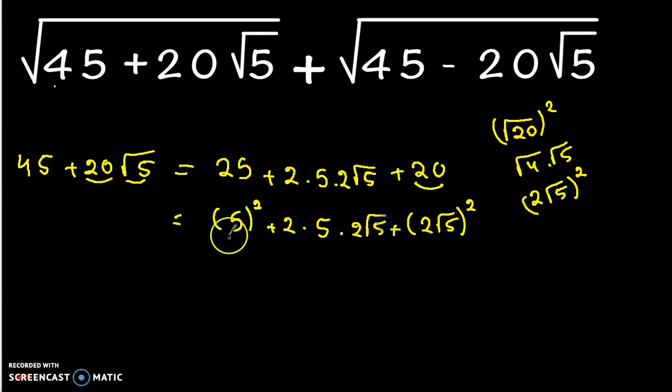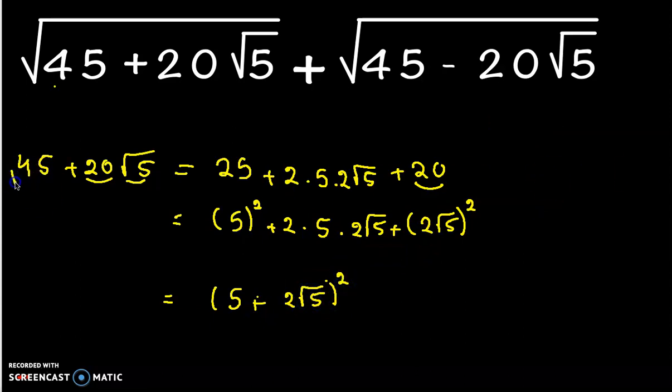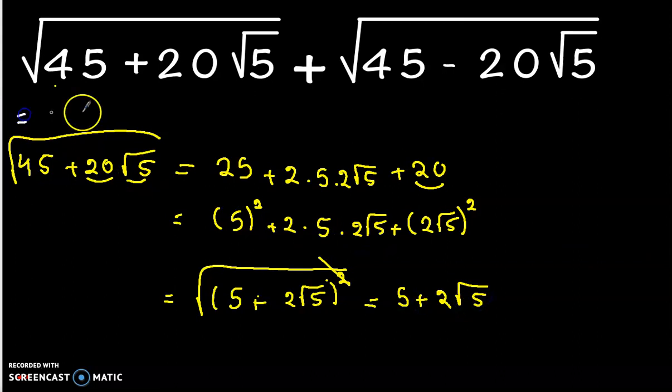So now we have a² plus 2ab plus b². We can write it as (a + b)². And now √(45 + 20√5) equals √(5 + 2√5)² which equals 5 + 2√5.